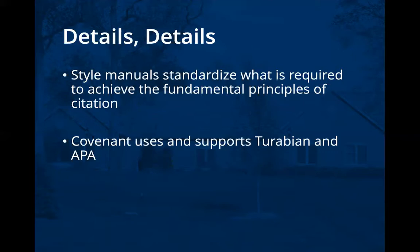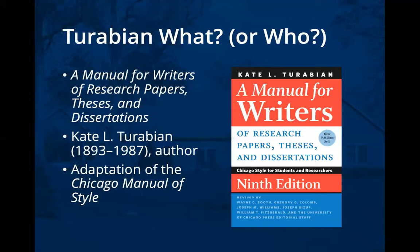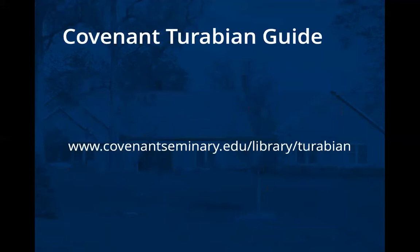Covenant uses and supports Turabian and APA style. Tonight we're going to be talking about Turabian — a manual for writers of research papers, theses, and dissertations. This was originally written by Kate L. Turabian, who was the graduate school dissertation secretary and a publication editor at the University of Chicago. She started off producing simplified and adapted Chicago style guides in the context of dissertations and research papers, and that eventually grew into this adaptation of the Chicago Manual of Style. We have our own guide to Turabian on our website at covenantseminary.edu/library/turabian.